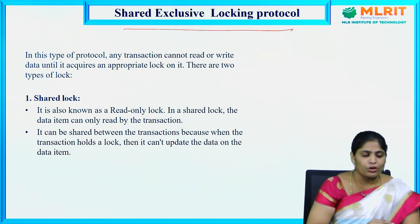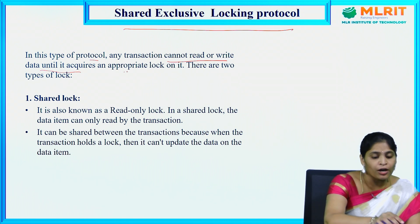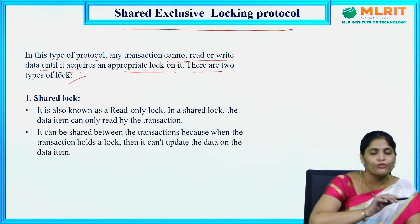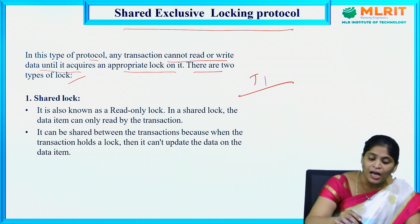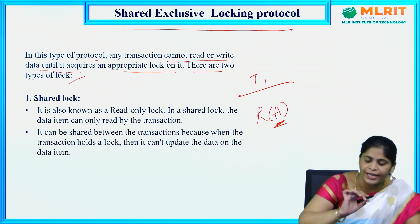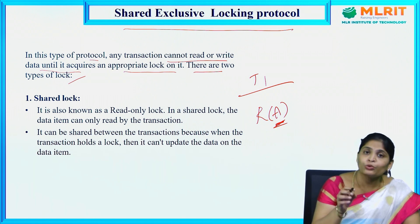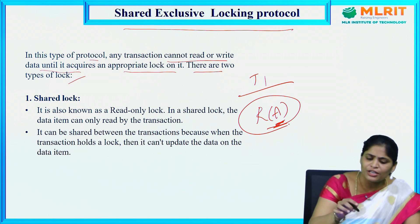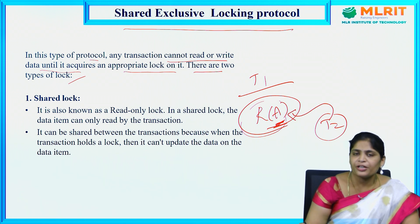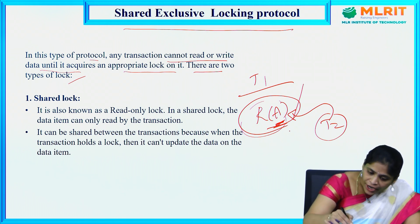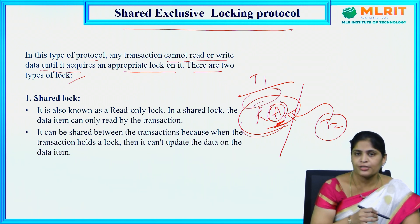In the shared-exclusive locking protocol, any transaction cannot read or write a data item until it acquires an appropriate lock on it. There are two types of locks: shared lock and exclusive lock. For example, if I want to perform a read operation on data item A in transaction T1, I can only do so after acquiring a lock. This is because, while I am reading, T2 might ask for the same data item. To avoid this situation, we must lock the data item — and for reading, we acquire a shared lock.